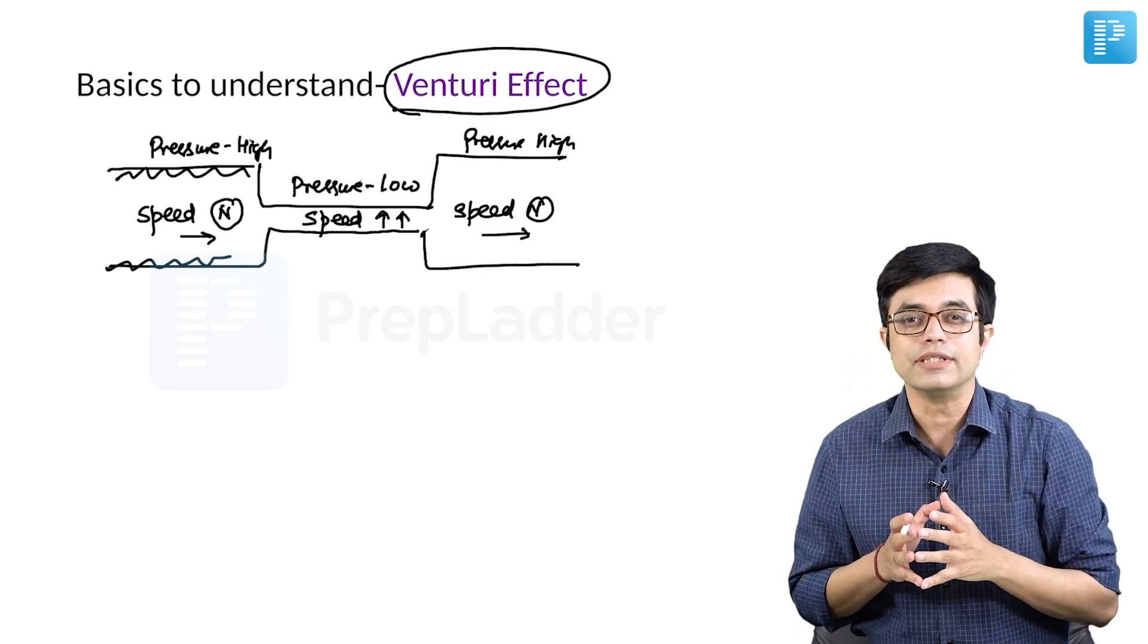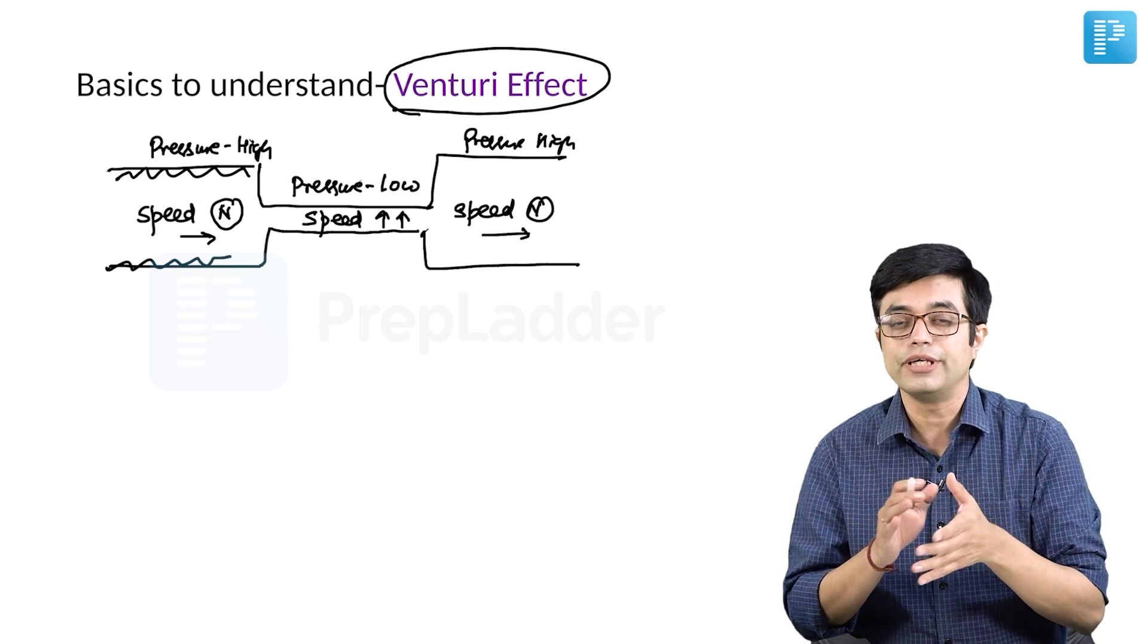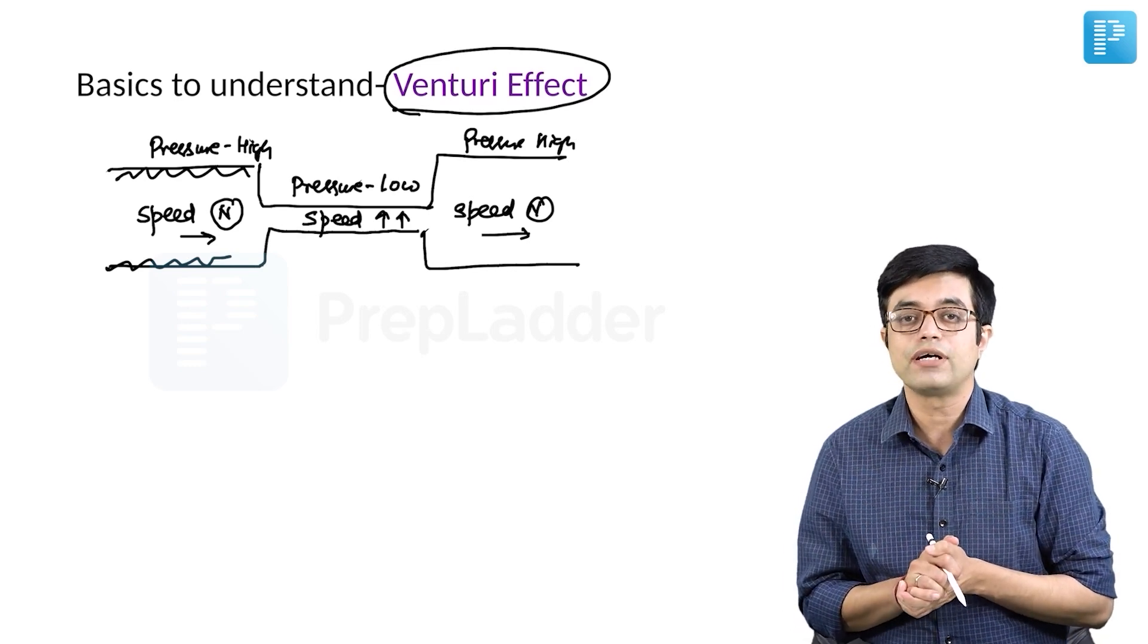What is the importance of this? This is what produces LV outflow tract obstruction in patients of hypertrophic cardiomyopathy.